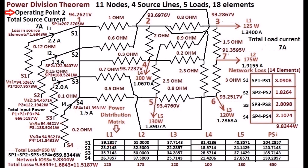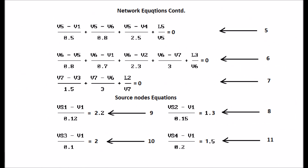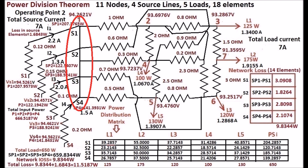The second operating point is found by solving the 11 equations with the 4 source currents: 2.2 ampere, 1.3 ampere, 2 ampere, and 1.5 ampere — totaling 7 ampere, as shown in the display. The 4 sources are in the same location as in operating point 1.